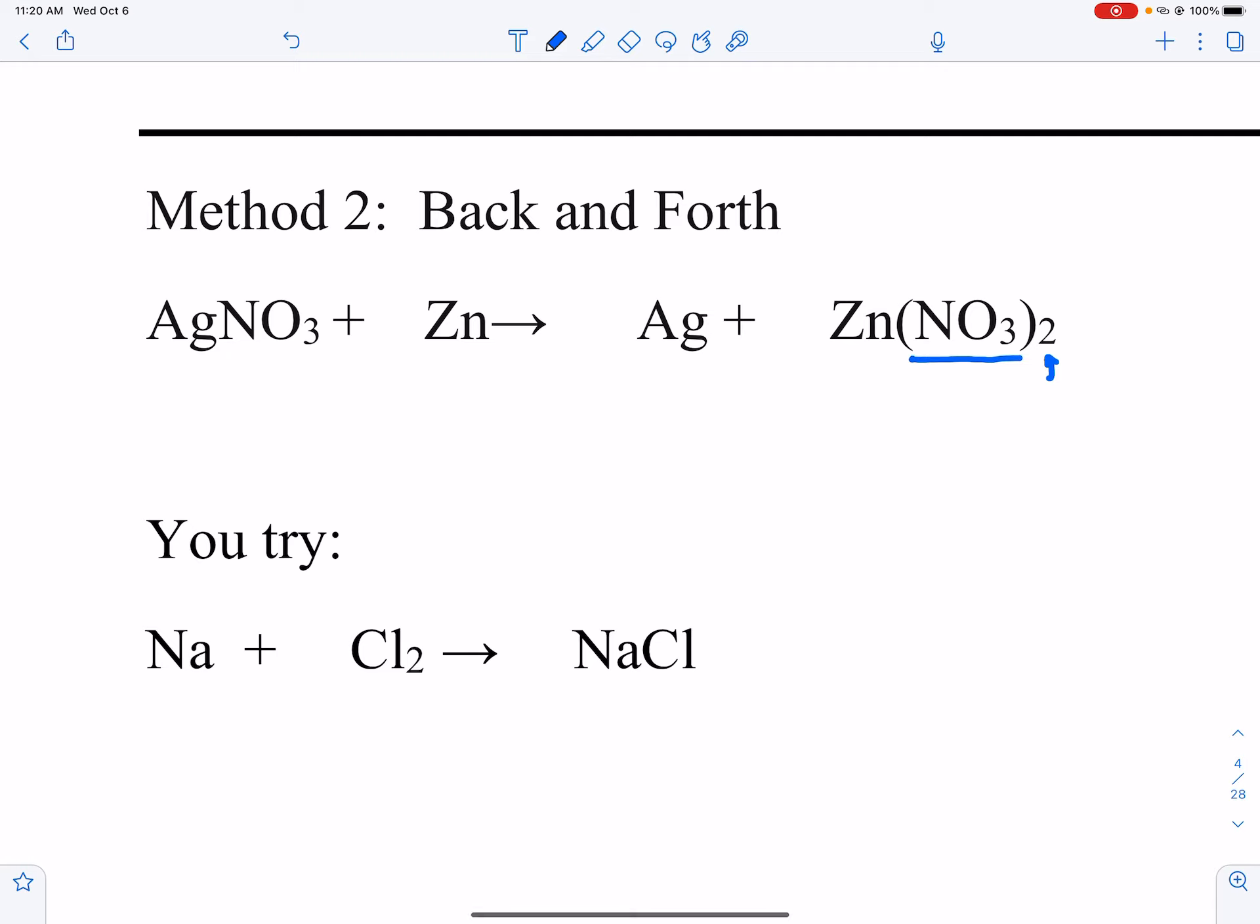It's the NO3 group. Right now I've got two on the right and I have one on the left, so I fix that situation by putting a two. So my NO3s are fixed, but because I just put a two in front now my AGs are off. So I know that I need two AGs so I jump over here and I put a two right there. I do a last check on my remaining element that I haven't touched. It's all one so I'm good to go.